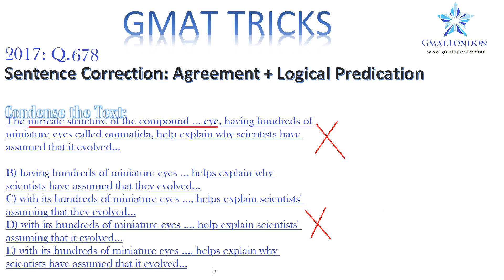What's the difference between B, C, and E? Can you spot it? B and C have 'they evolved' at the end, whereas E has 'it evolved.'